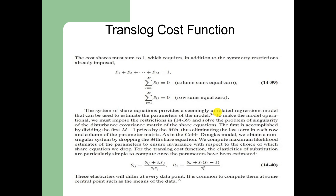The system of share equations provides a seemingly unrelated regressions model that can be used to estimate the parameters of the model. To make the model operational we must impose the restrictions in 14.39 and solve the problem of singularity of the disturbance covariance matrix of the share equations. This is accomplished by dividing the first m minus 1 prices by the mth price, thus eliminating the last term in each row and column of the parameter matrix.